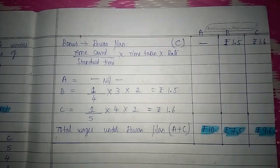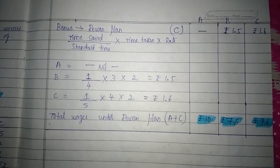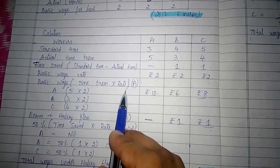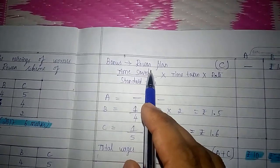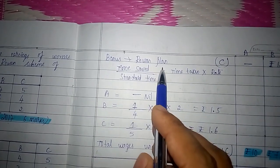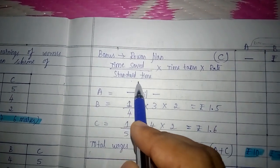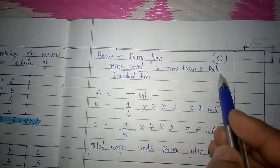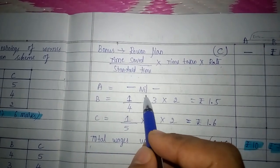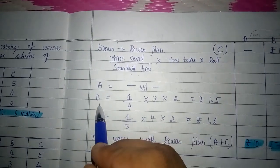Total earnings under Rowan system can be calculated using the formula: time taken into rate per hour plus bonus. We have already calculated time taken into rate. The bonus under Rowan's plan is calculated using the formula: time saved divided by standard time, into time taken, into rate per hour. In the case of A, since he has taken more hours than the standard time, he has not saved any hours and is not entitled to get any bonus — nil.